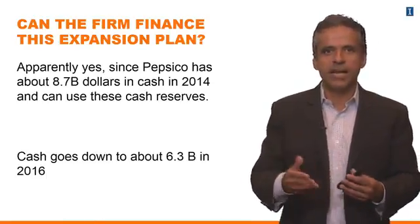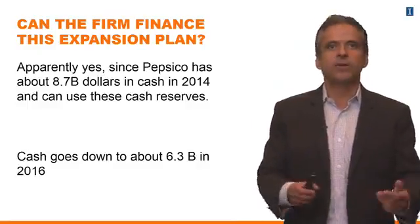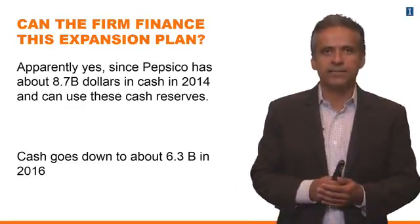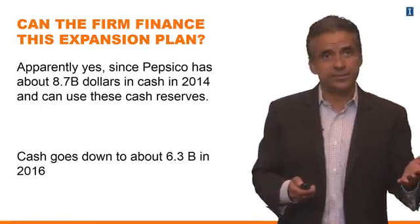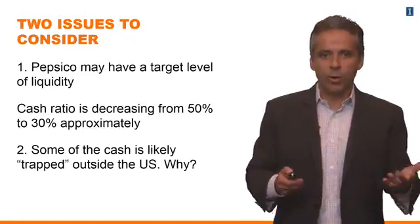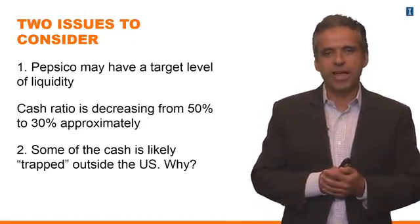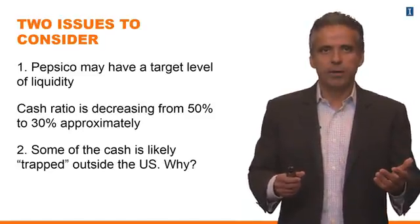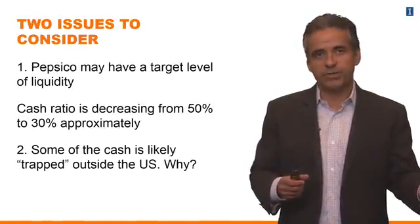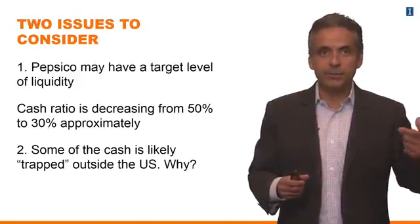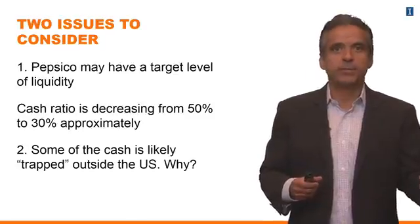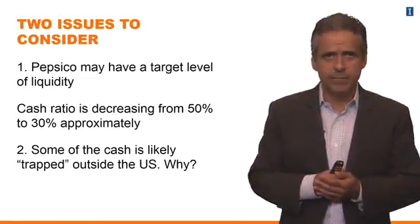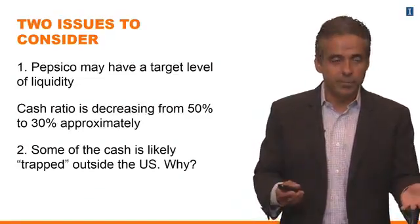The answer would be different, for example, if cash had become negative. So if you figure out that you don't have enough cash to finance an expansion plan, then you're going to need to issue new funds — that's when the company has to go to the capital markets and raise new financing. But notice the word 'seems.' Remember in Module 1 we talked about liquidity and cash ratio. PepsiCo had approximately a 50% cash ratio in 2014 — cash divided by current liabilities — and this cash ratio is going down from 50% to 30%.